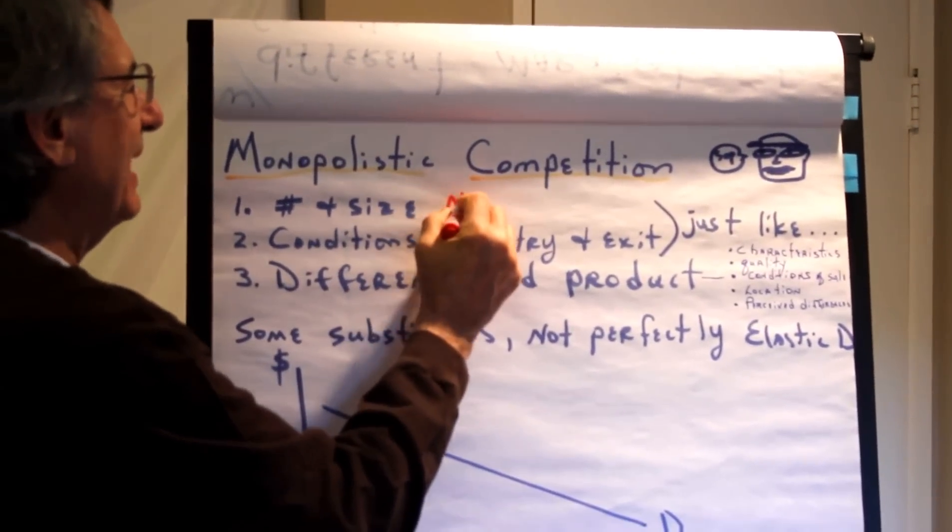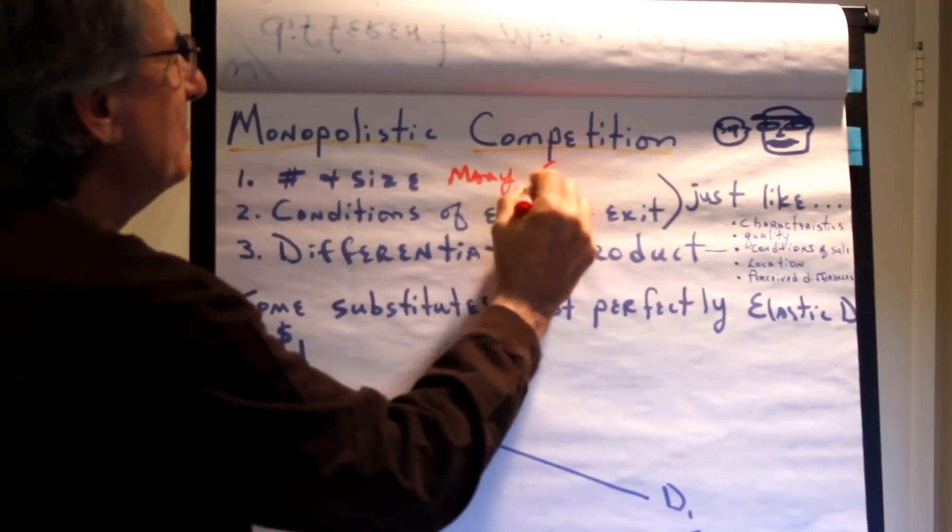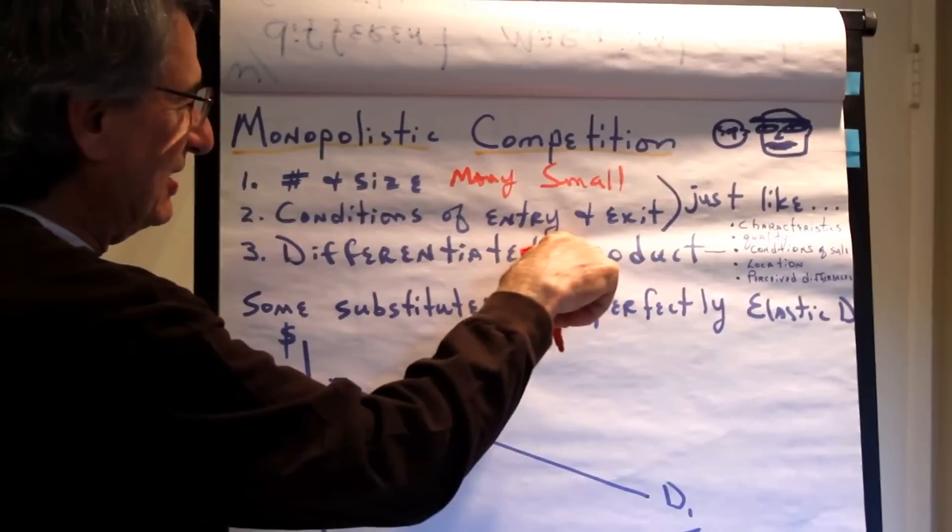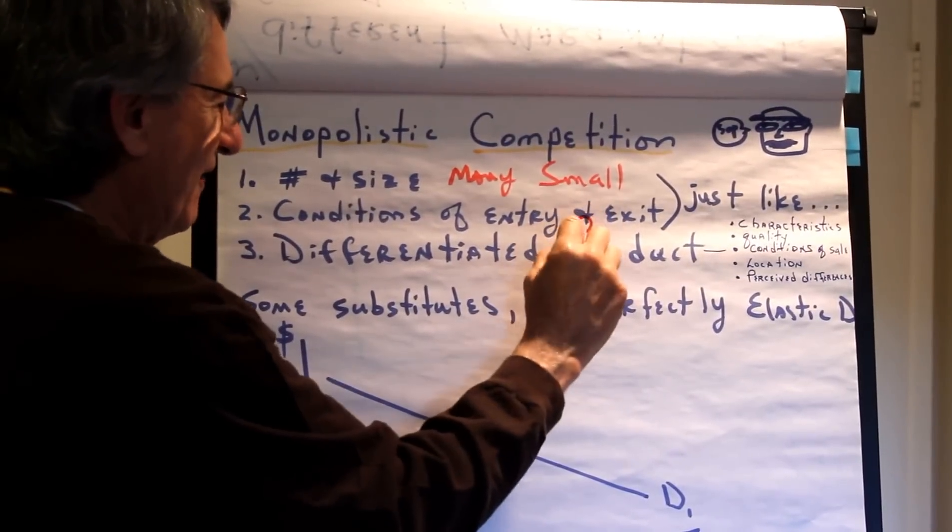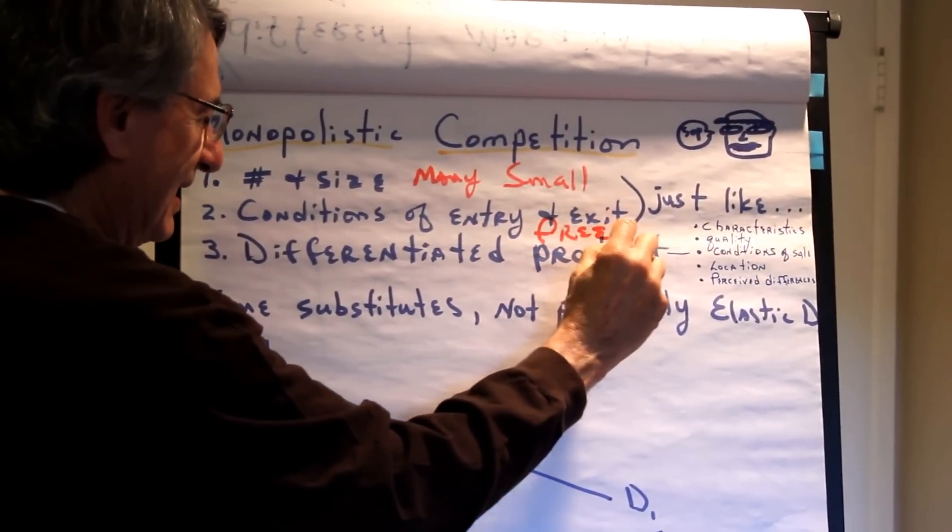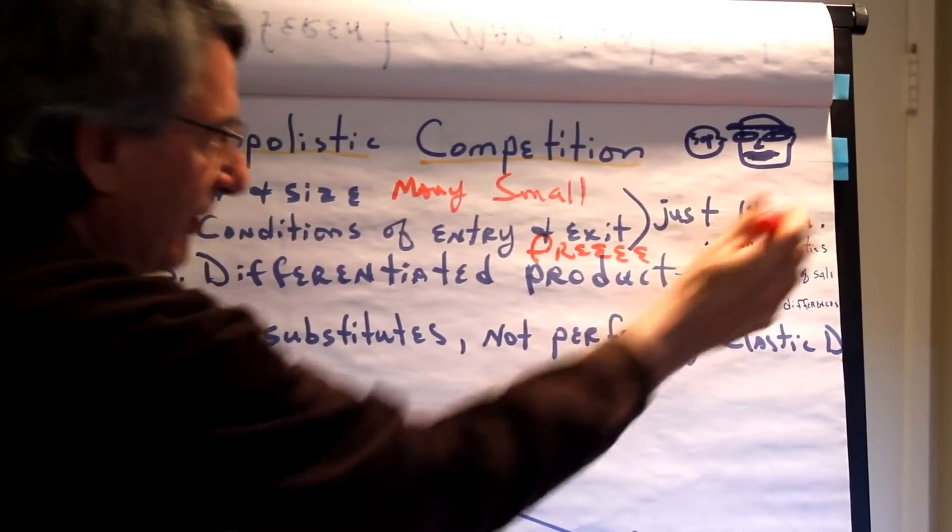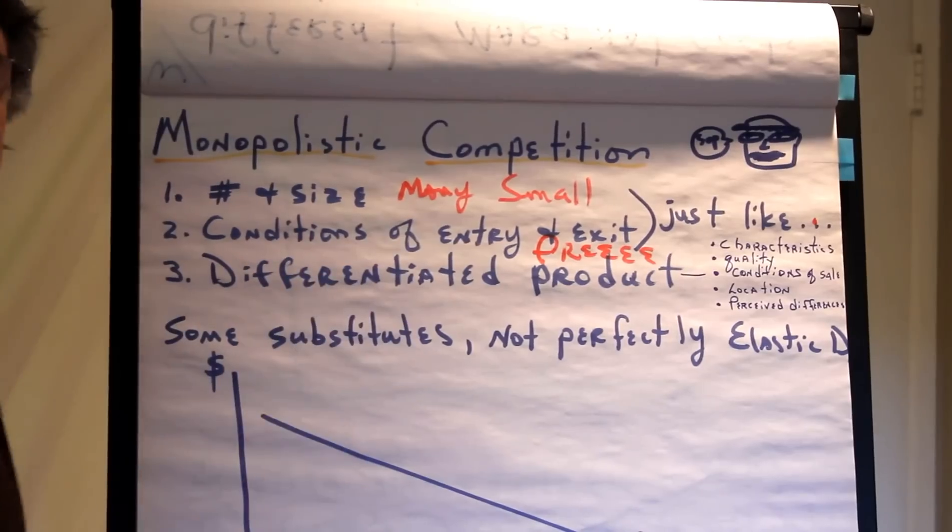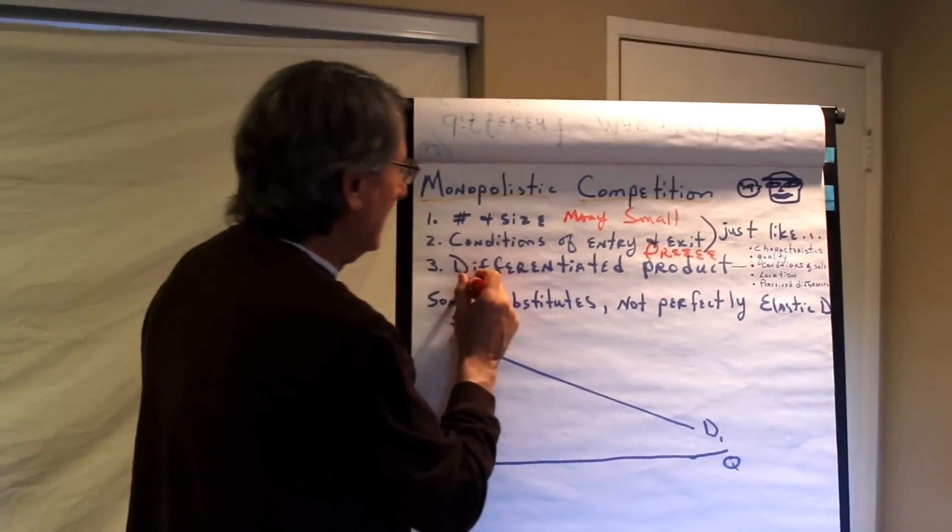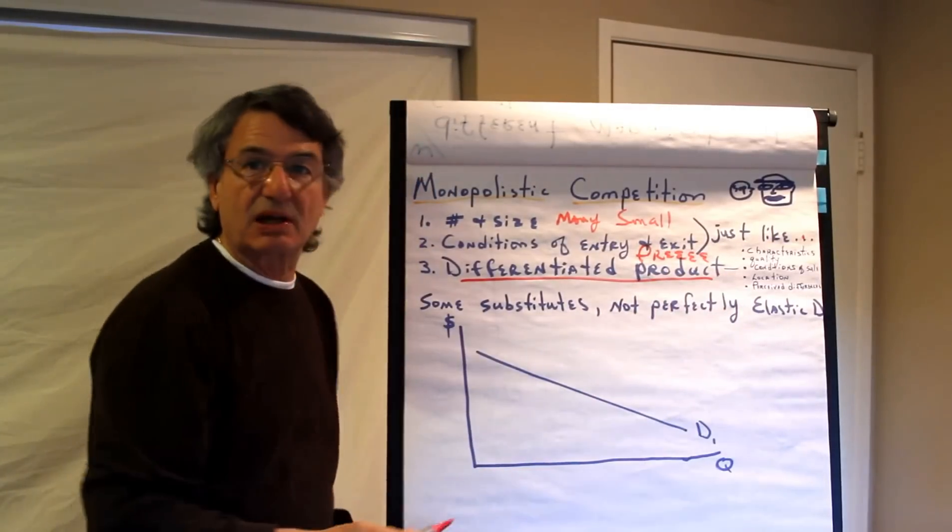In the case of monopolistic competition, number and size, many, small, just like pure competition. Conditions of entry and exit are free. So these first two are exactly like pure competition.